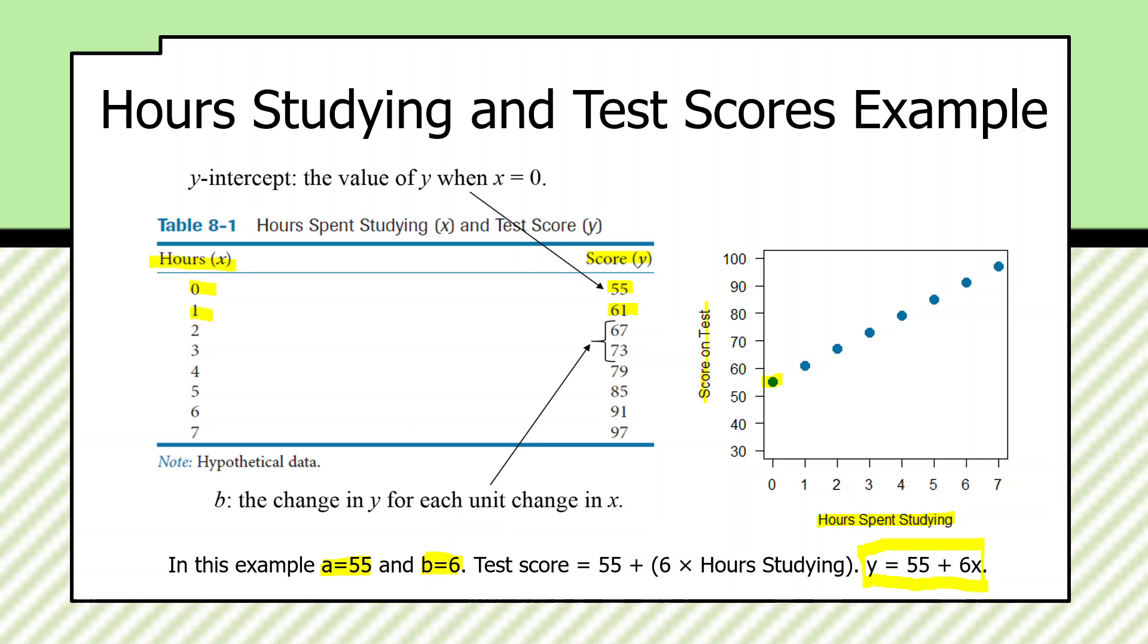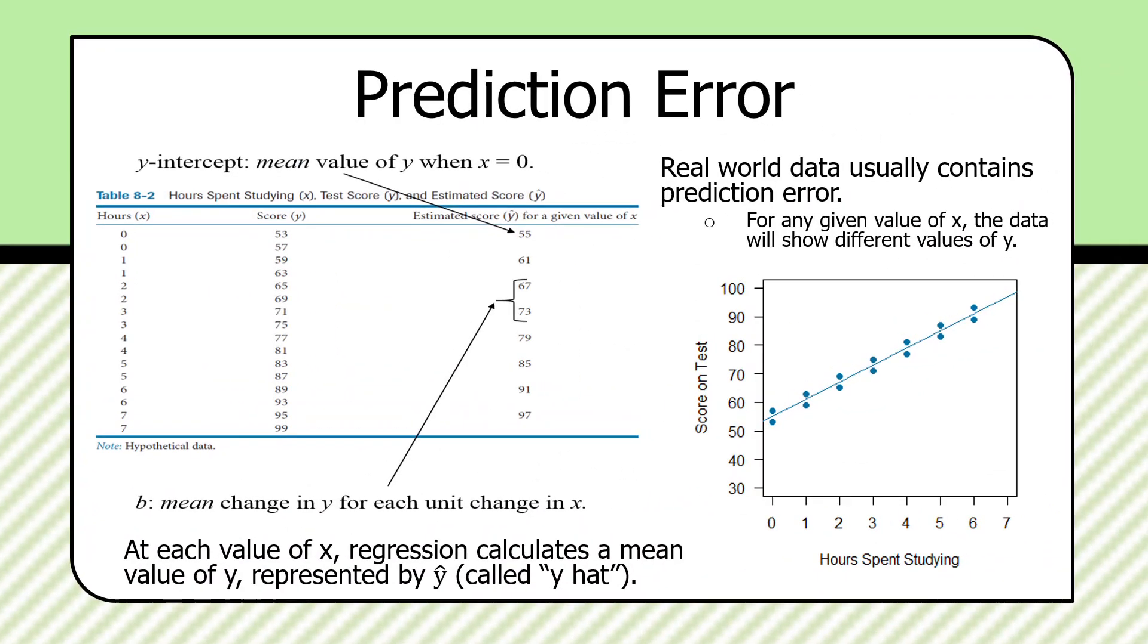Now, most real-world data, of course, is not this neat. There is no error in this. It's like lockstep. Every time there's an additional hour spent studying, the score goes up by exactly six points. Most data in the work that we do in social science